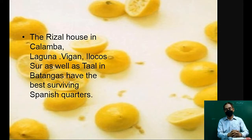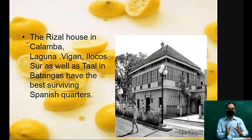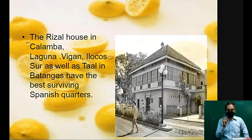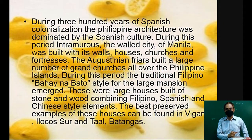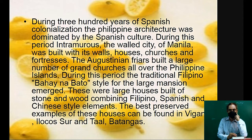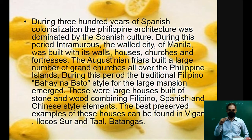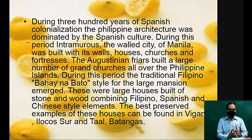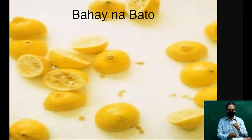The Rizal House in Calamba, Laguna, Vigan in Ilocos Sur, as well as Taal, Batangas, have the best surviving Spanish quarters. During 300 years of Spanish colonization, architecture in the Philippines was dominated by Spanish culture. During this period, Intramuros — the walled city of Manila — was built with its walls, houses, churches, and fortresses. The Augustinian friars built a large number of grand churches and houses all over the Philippine islands. The traditional Filipino bahay na bato style for large mansions emerged — large houses built of stone and wood combining Filipino, Spanish, and Chinese style elements.